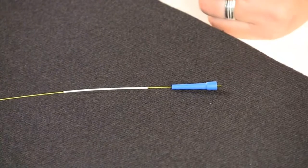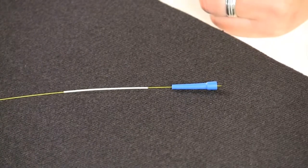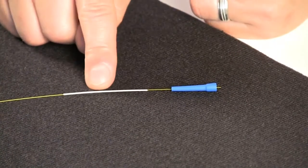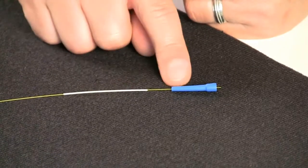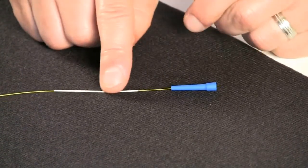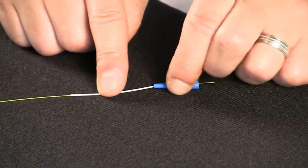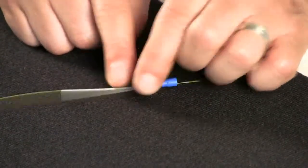When terminating 250 micron fiber onto an OptiCam, you need to install a buildup tube before you install the boot. So the buildup tube will slide onto the fiber and then the boot slides over the buildup tube.